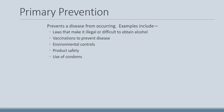Environmental controls are also primary prevention — for example, a program that eliminates areas where ticks live to address Lyme disease. Product safety, such as child-resistant medication packaging, or the use of condoms to prevent the spread of disease, are all examples of how primary prevention works to stop a disease from actually happening.